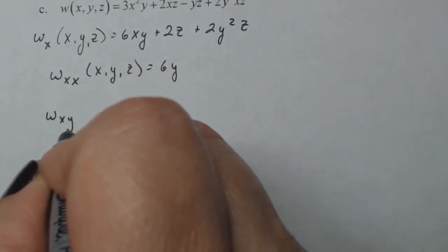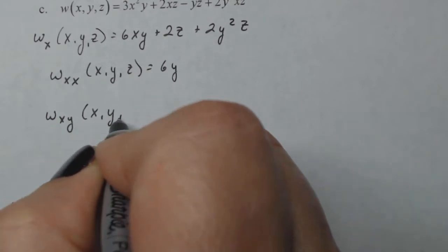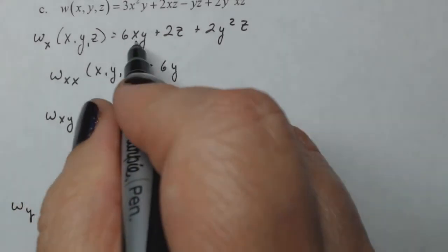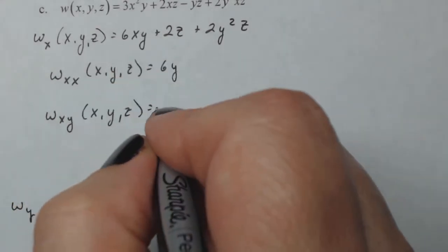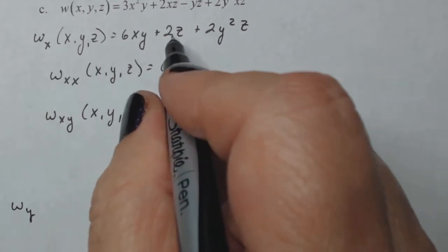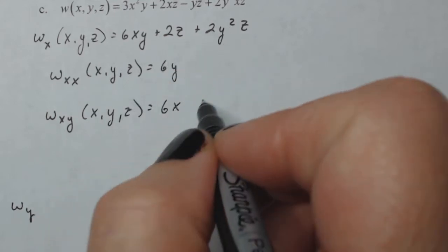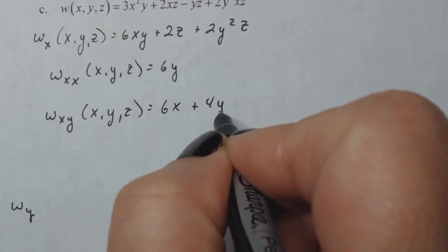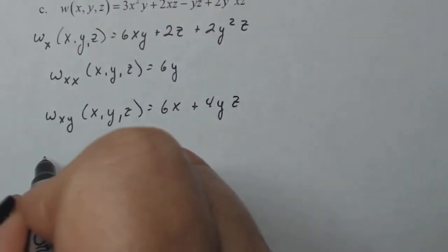W sub X Y gives me, let's see, that has a Y in it. So that'll be six X, no Y here, a Y squared here. So that should be four Y Z and then W sub X Z.